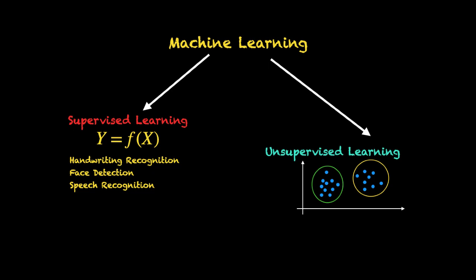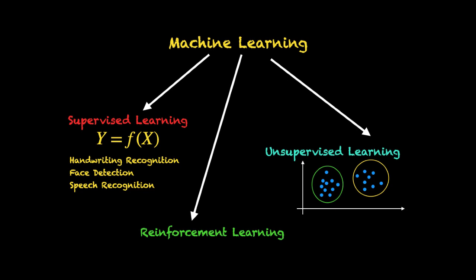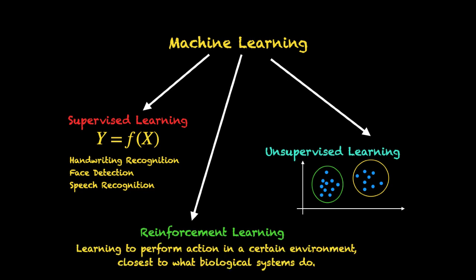These are the two most popular paradigms of machine learning, but one more paradigm which has become very popular in recent years is called reinforcement learning. Reinforcement learning is essentially about learning to perform actions in a certain environment, which is very similar to how biological systems evolve. For example, like a bacterial cell or even human beings, we operate in a certain environment, perform certain actions, and depending on the rewards we get by performing those actions, we update our decision-making process — that is the kind of policy reinforcement learning is trying to mimic.